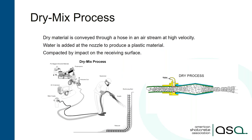We have two major processes in Shotcrete: the dry mix process and the wet mix process. If I want you to take away three things from this webinar, it's that Shotcrete is concrete, and that you have a basic understanding of the difference between dry mix and wet mix. In the dry mix process, you are providing dry material into the Shotcrete gun, and it is propelled by compressed air through the hose to the nozzle.